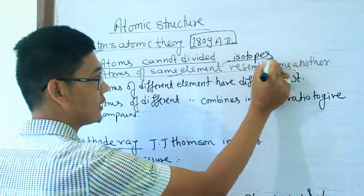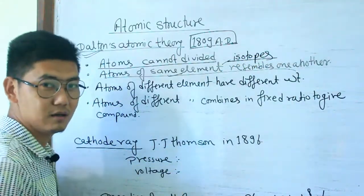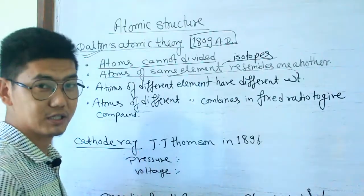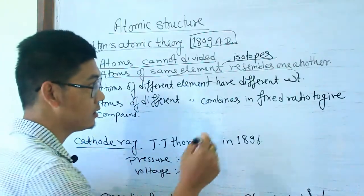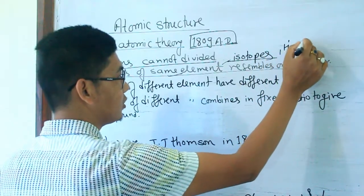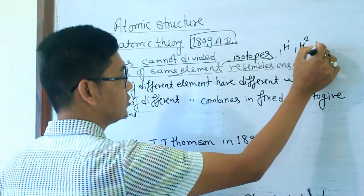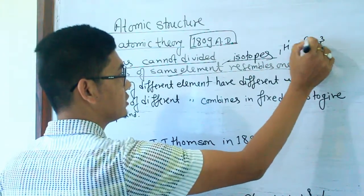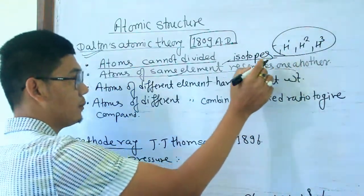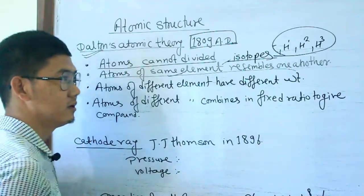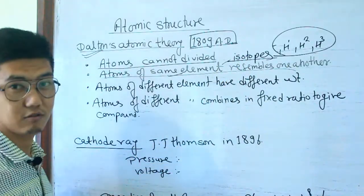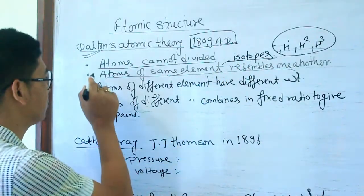However, isotopes have the same element but different atomic mass. For example, Hydrogen: ¹H¹, ¹H², ¹H³ — Protium, Deuterium, Tritium. So there are three atoms of the same element but the mass is different.